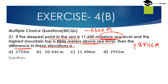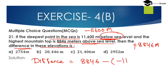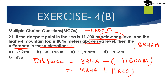Now the difference in elevation means we have to subtract the deepest point from the highest mountain top. That is: 8,846 minus (minus 11,600). So we subtract the deepest point from the highest mountain top: 8,846 minus of minus 11,600.